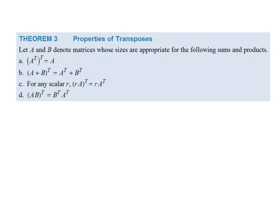Properties of transpose: transposing a transpose returns the original matrix. Transposing a sum equals the sum of the transposes. A scalar can be factored out before or after transposing. Most notably, the transpose of a product reverses the order: (AB)^T = B^T A^T. The product of transposes is in reverse order. That ends section 2.1 — get started on your homework and have a wonderful day.